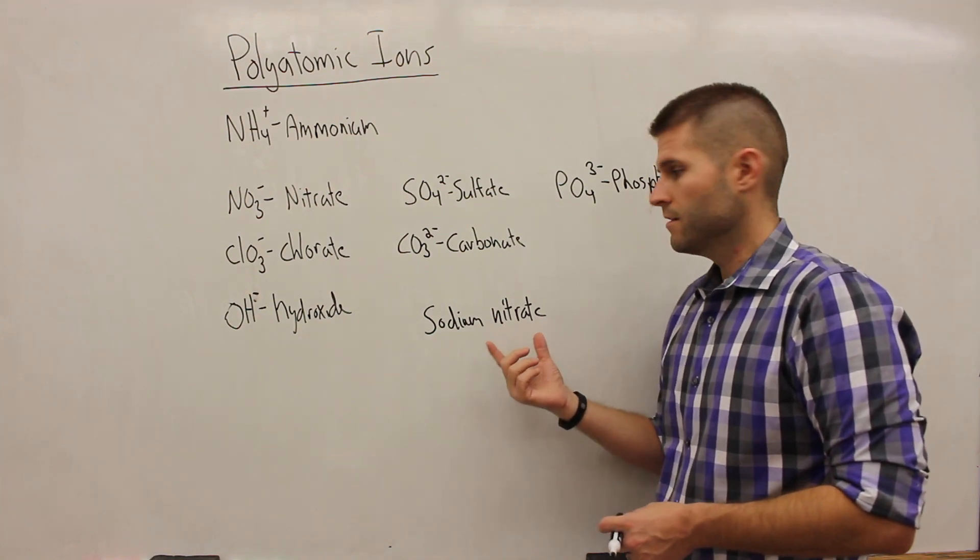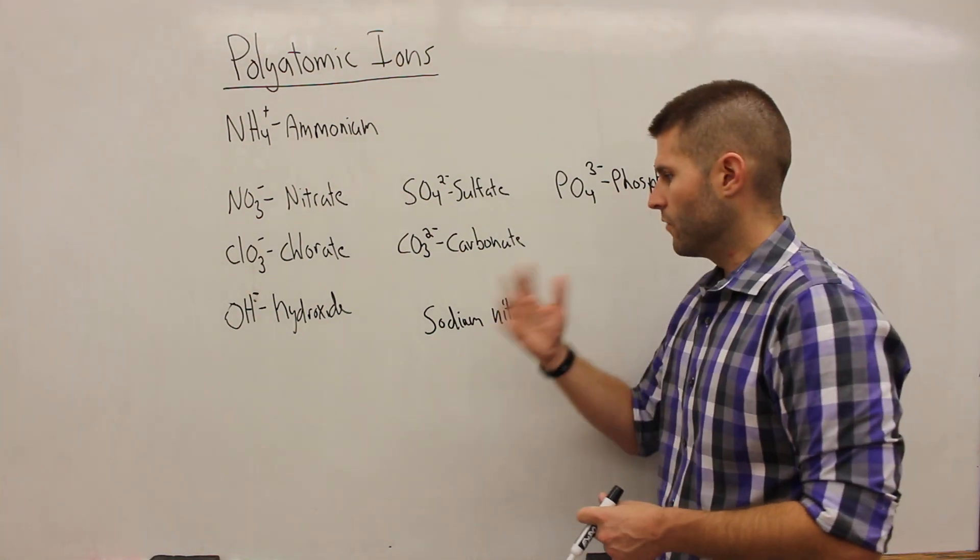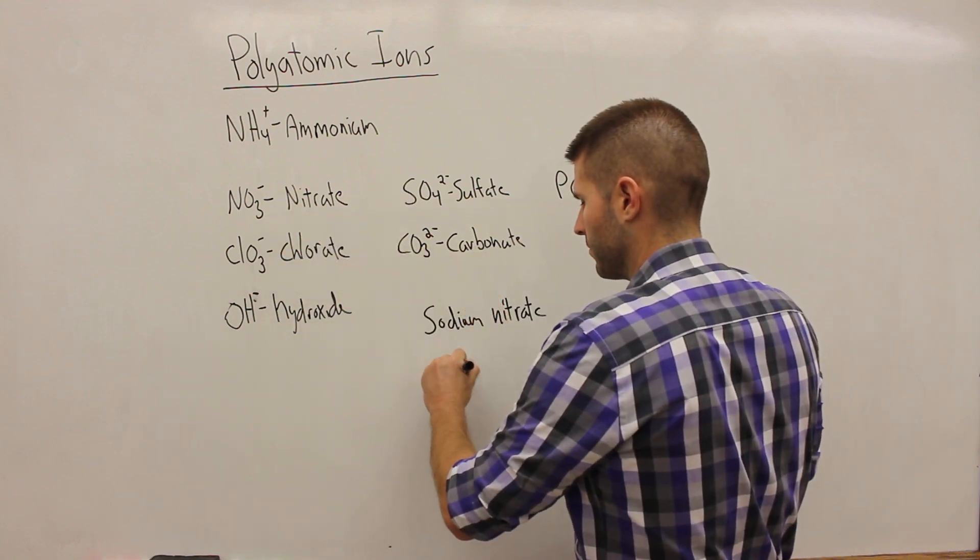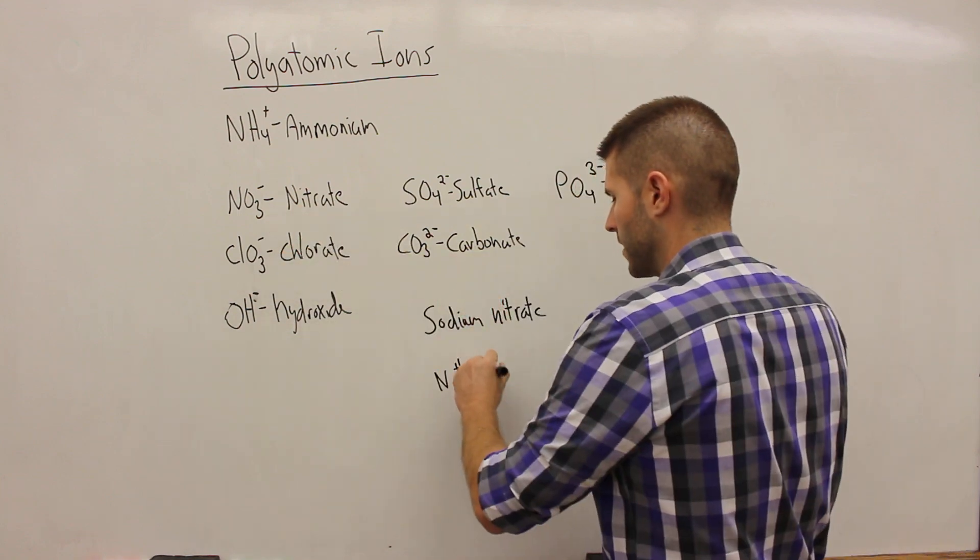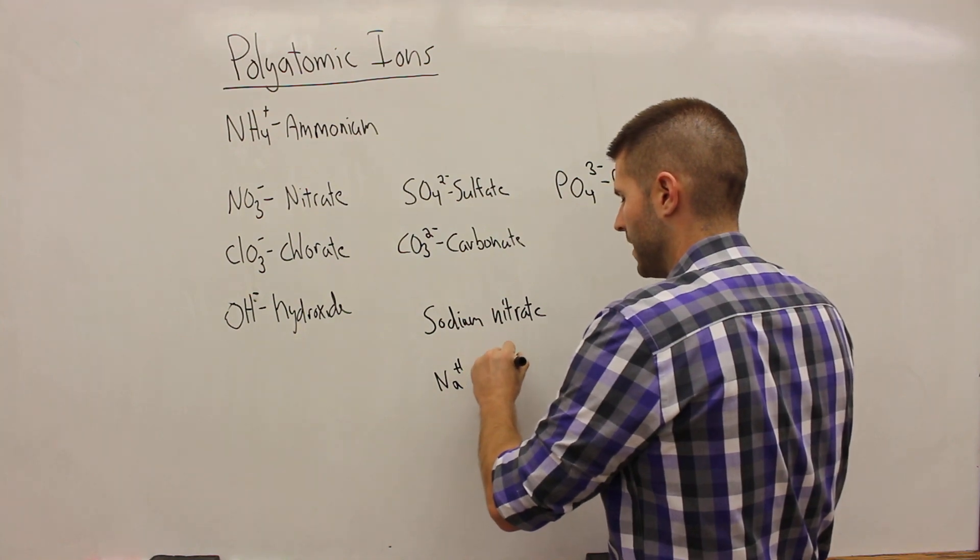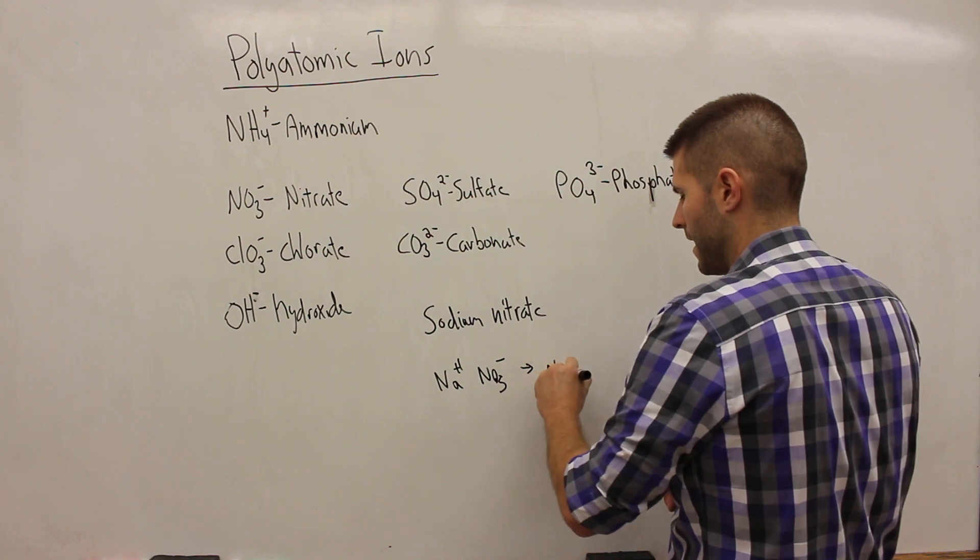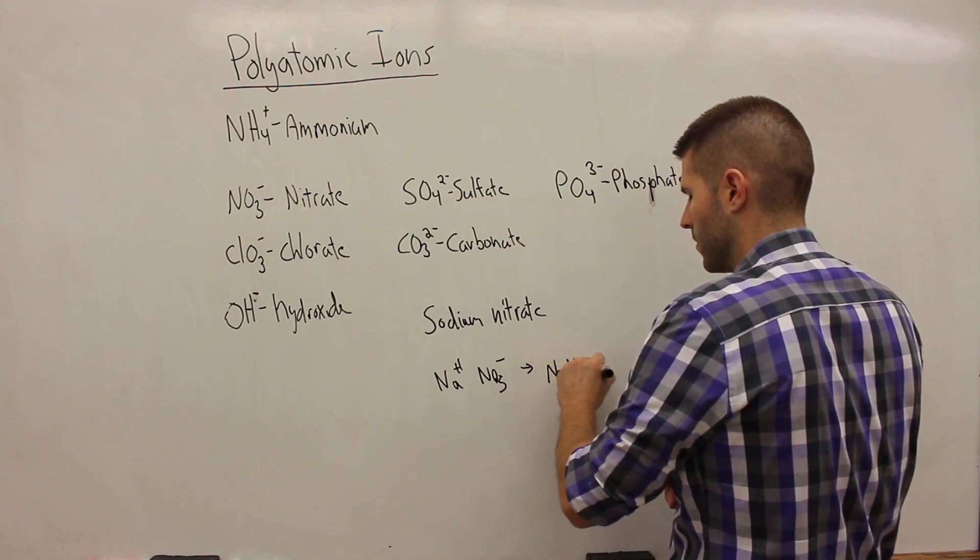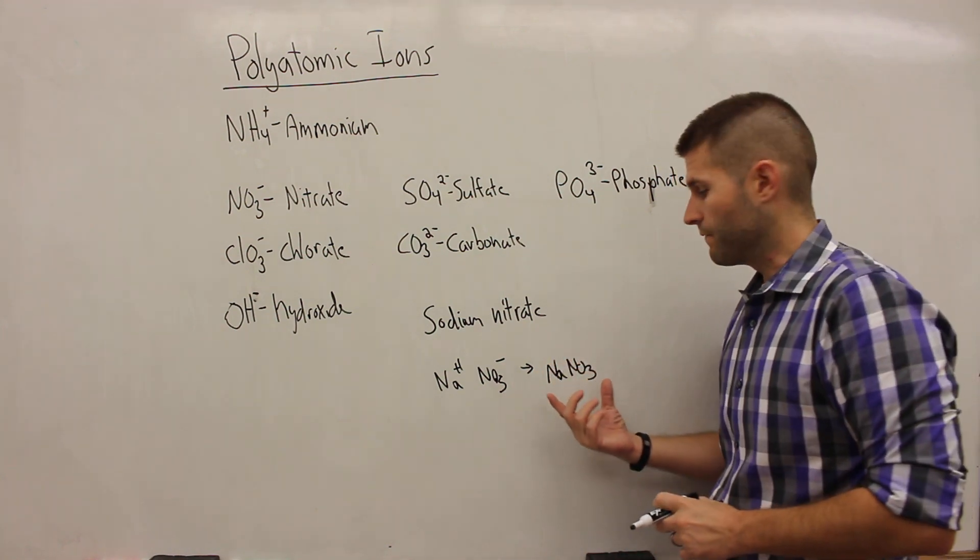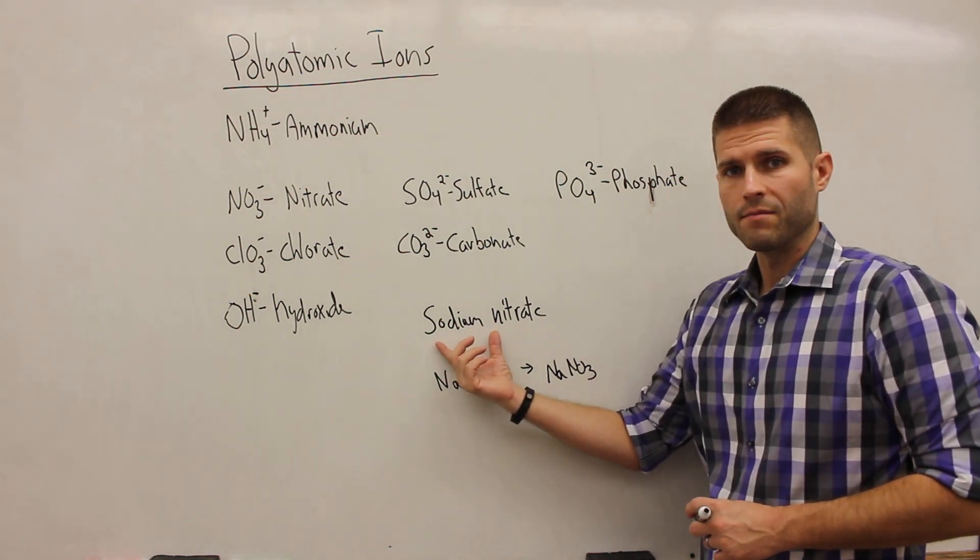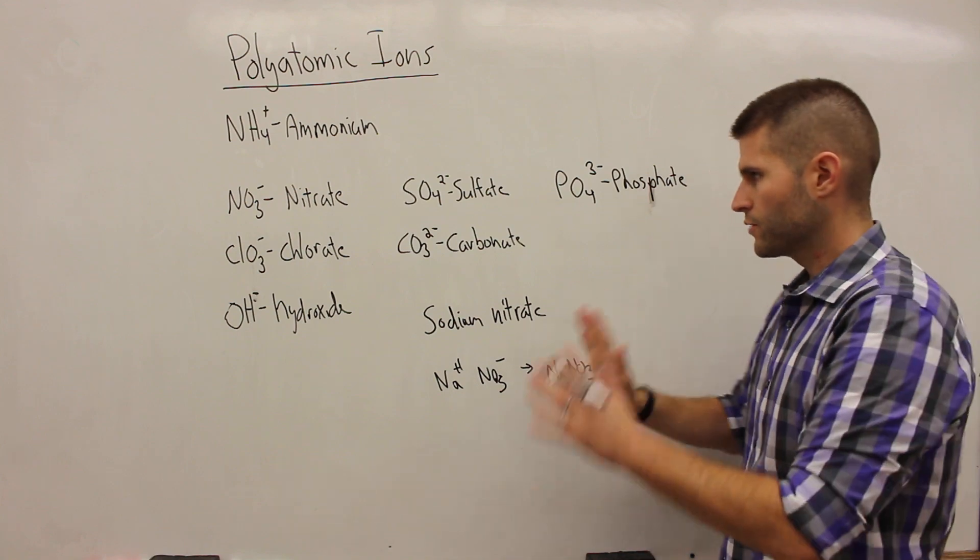So if we were to write this, we would know that sodium is in group 1A. It has a plus one charge, nitrate NO3 minus. And so if we were to cross multiply, our formula would be NaNO3. So this is the formula for sodium nitrate. This is how we would write the name for sodium nitrate. So that's one example.